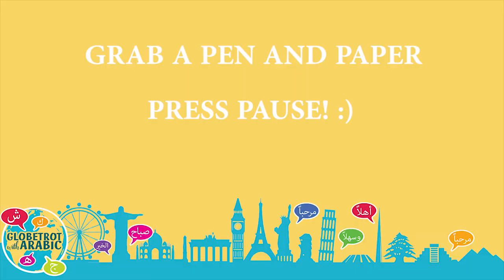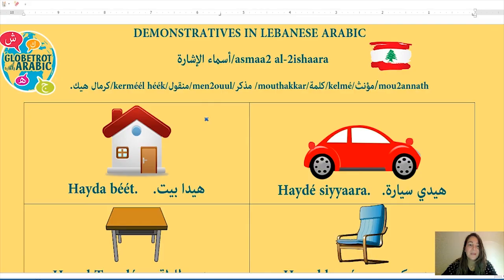This is going to be a Lebanese Arabic grammar lesson. Today we will study demonstratives — asma'il ishara. Asma'il ishara means demonstratives.